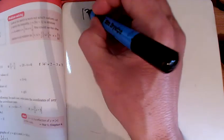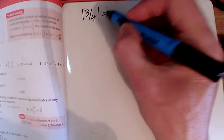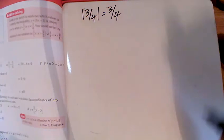Question 1, modulus of 3 quarters is just 3 quarters, nothing to do there because it's already positive.